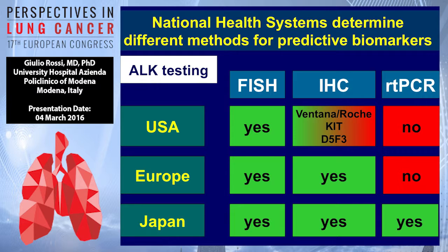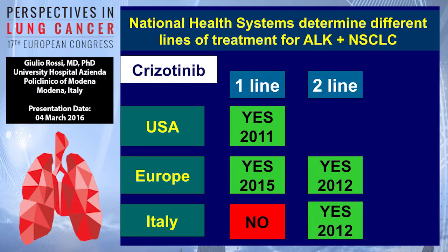Even in the routine algorithm, national systems determine differences in methods for biomarkers. For ALK testing in the USA, approval exists for FISH and immunohistochemistry using the D5F3 Ventana companion diagnostic, and RT-PCR can also be used. In Europe, FISH and immunohistochemistry are approved but not RT-PCR. In Japan, FISH, immunohistochemistry, and RT-PCR are all available. The algorithm may also change based on first-line versus second-line approval — for example, in Italy, crizotinib is not currently approved in first-line.